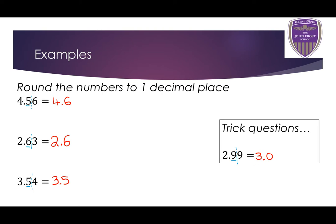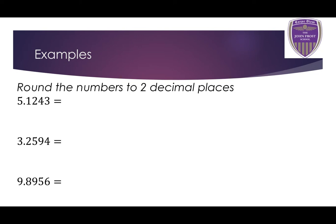Now let's look at a couple more examples rounding to two decimal places. We're rounding these to two decimal places, so we're finding the second decimal place, not the first. In 5.1243, the 2 is in the second decimal place, so I draw my line after it. The number after the line is 4, which isn't 5 or bigger, so the 2 stays the same, as does the 1 in the first decimal place. So 5.1243 rounded to two decimal places is 5.12.